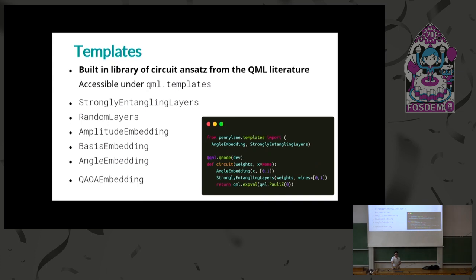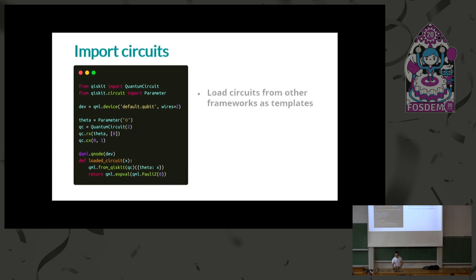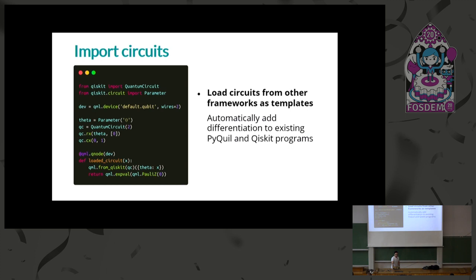We heard feedback from users who had existing code in Qiskit or PyQuil that they wanted to interface with their machine learning models without rewriting it. So we added the ability to import from quantum libraries like Qiskit, QASM, PyQuil, and Quil. The code runs the same circuit, gets converted into a QNode, and becomes end-to-end differentiable. You can take your existing code and interface it with PyTorch or TensorFlow straight away — and even deploy programs loaded from Rigetti Forest to another quantum hardware.